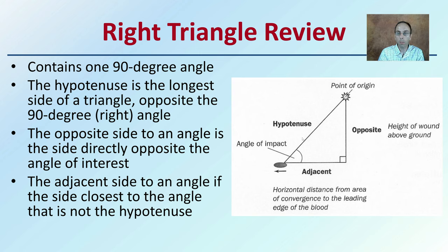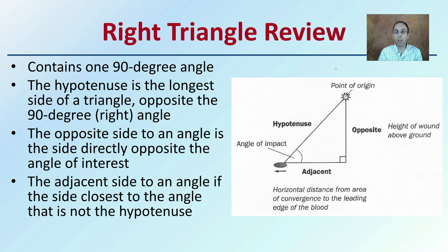So if here we have the angle of impact, we have the opposite side being here. That would make the third side the adjacent side — the side closest to the angle that is not the hypotenuse. Just a quick review of a right triangle because I'm going to be using these terms to determine the point of origin of a blood splatter.